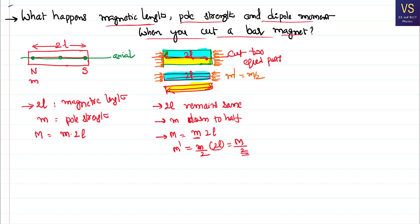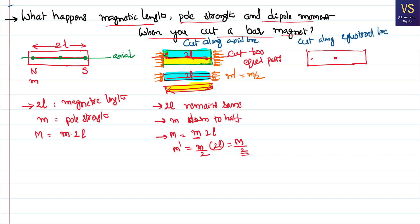That is all about cutting the magnet along the axial line. Now let's cut the magnet along the equatorial line. The equatorial line is the line passing perpendicular to the axial line through the magnetic center of the magnet.